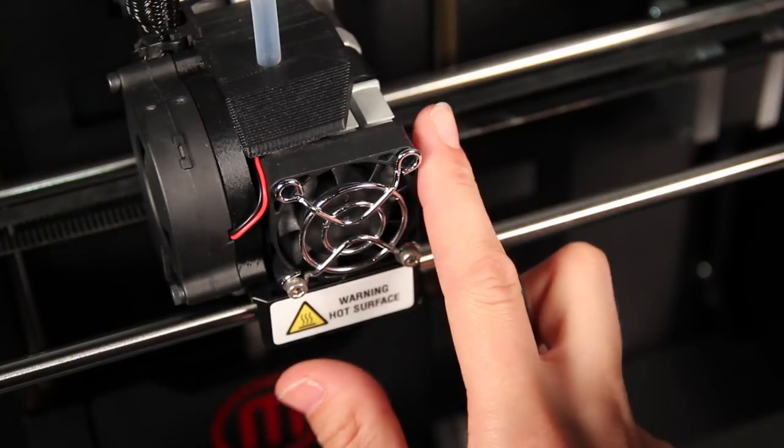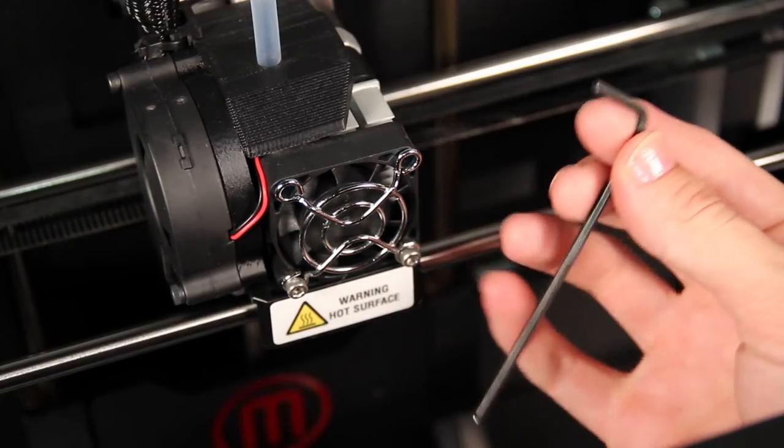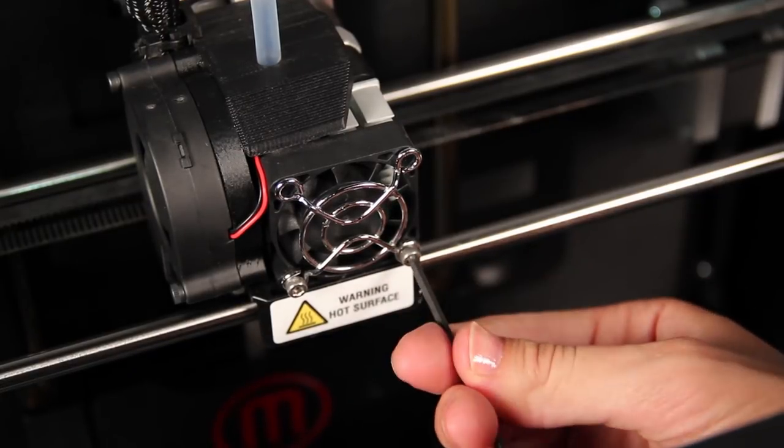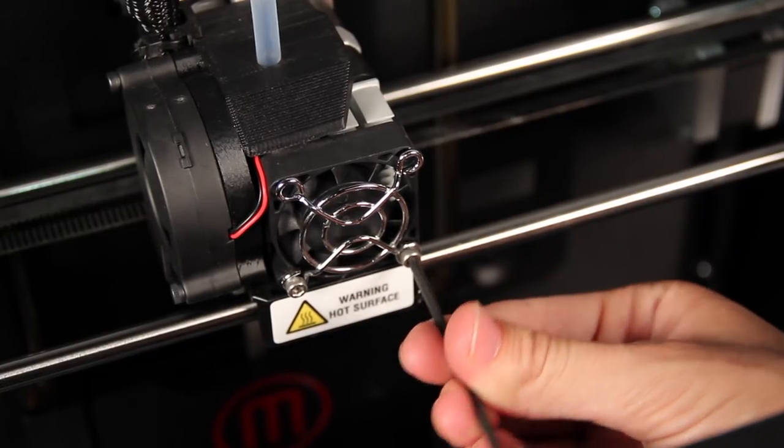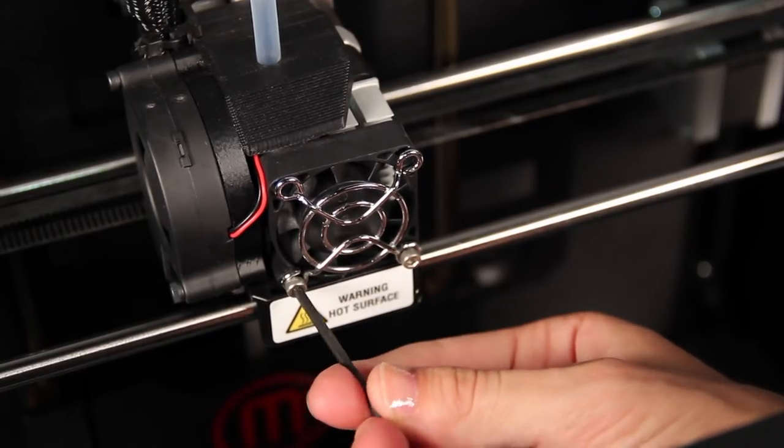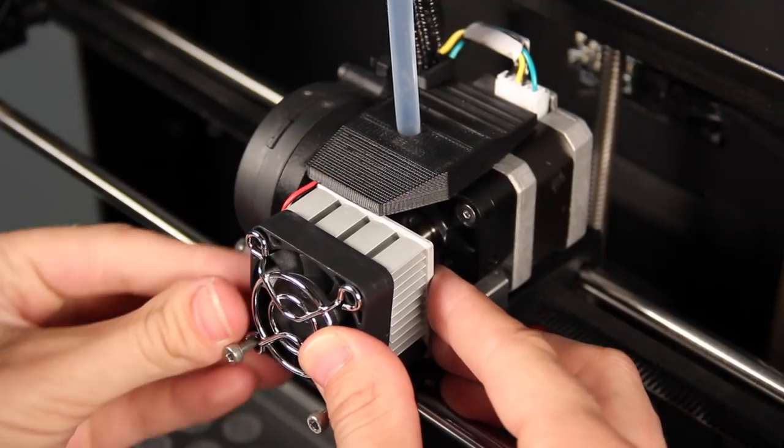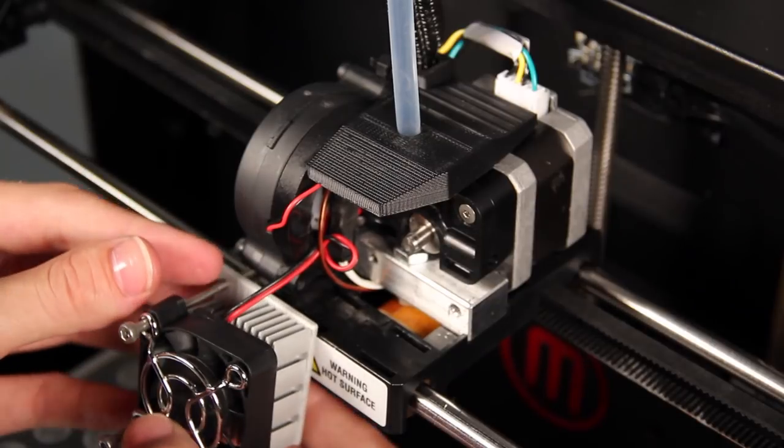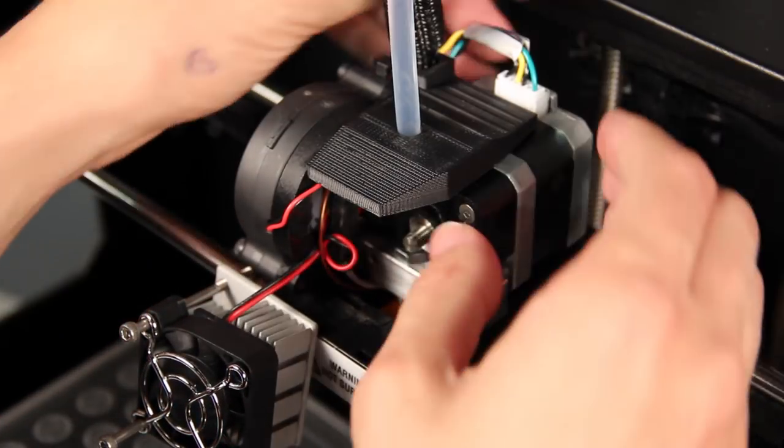Now take a look at the front of your extruder. Use the 2.5 millimeter hex key from your accessories bag to unscrew the two bolts in the lower corners of the fan. These bolts are pretty long so it may take a bit of turning. When you get them loose, just pull these three pieces out with the bolts in one chunk. It helps to keep them assembled and set them aside like this.